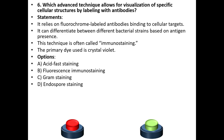Sixth question. Which advanced technique allows for visualization of specific cellular structures by labelling with antibodies? Statements: It relies on fluorochrome-labelled antibodies binding to cellular targets. It can differentiate between different bacterial strains based on antigen presence. This technique is often called immunostaining. The primary dye used is crystal violet.